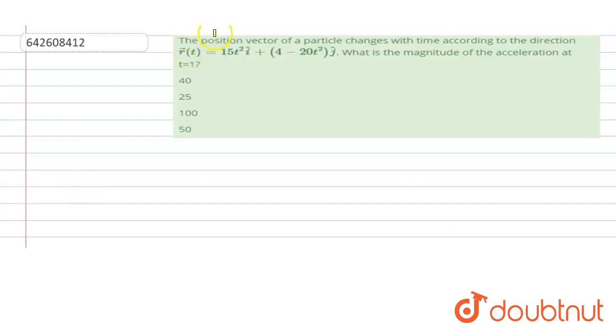Hello, the problem states that position vector of a particle changes with time according to the direction. R vector as a function of time is given by 50 t square i cap plus 4 minus 20 t square j cap. We have to find the magnitude of the acceleration at time 1 second. So let's look at the concept. We are given the position vector as a function of time, which is 50 t square i cap plus 4 minus 20 t square j cap.